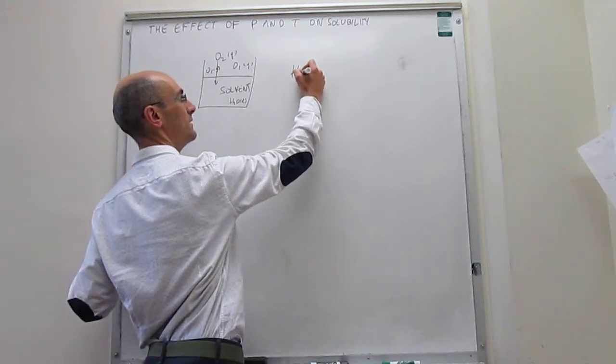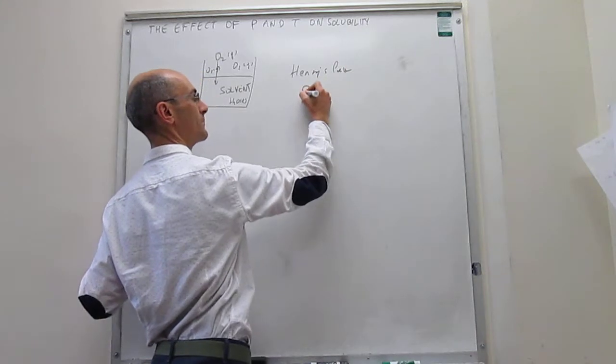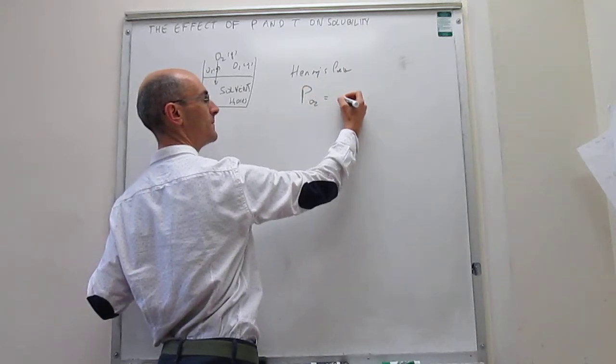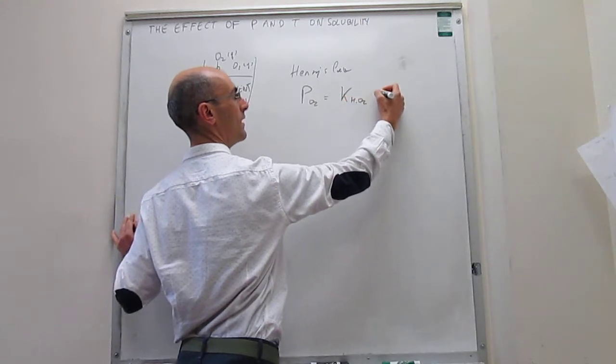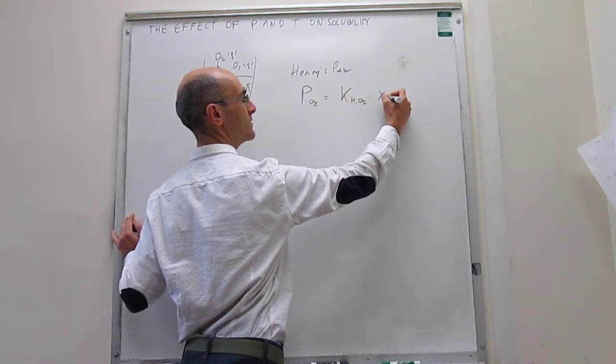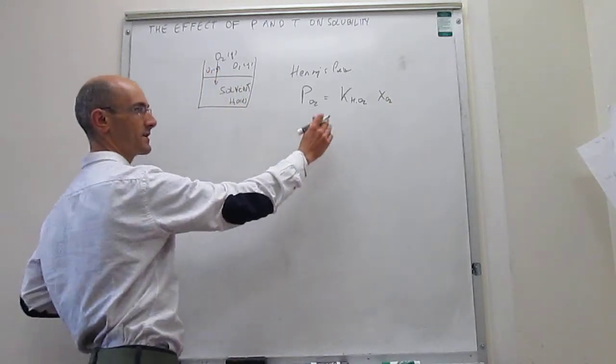Henry's law is like this: the pressure of oxygen on top of the liquid is going to be directly proportional to the mole fraction of O2 in that liquid. This is Henry's constant.